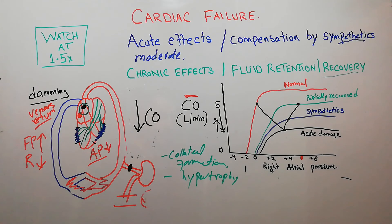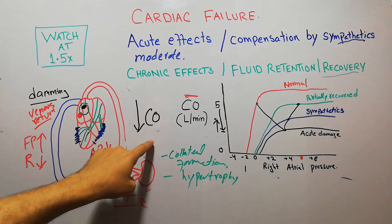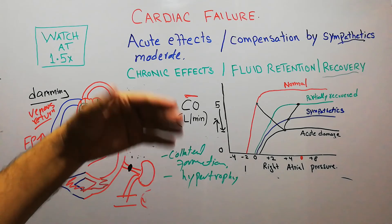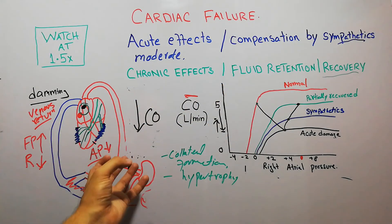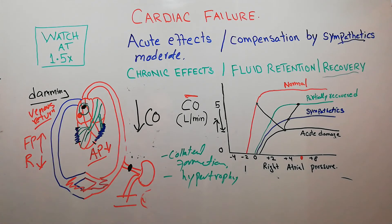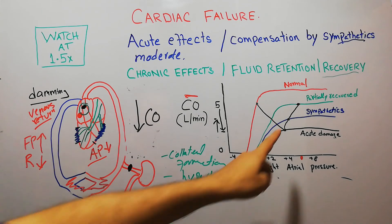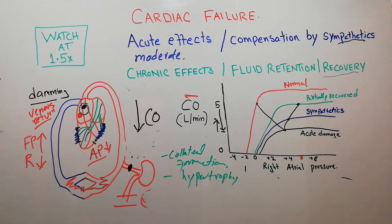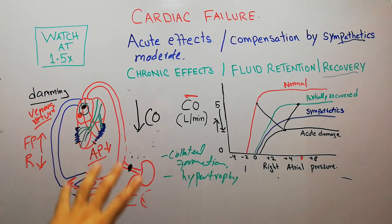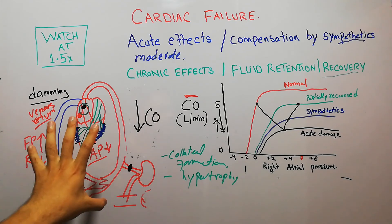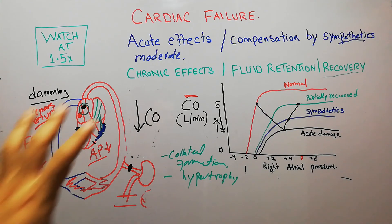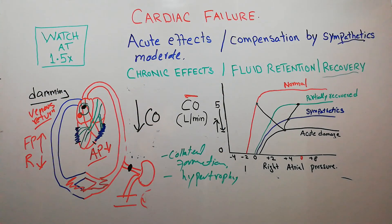In summary, the initial acute effects were decrease in cardiac output and damming of blood in the peripheries, compensated by the sympathetic system. Then the chronic stage starts with fluid retention: decreased blood flow to the kidneys reduces urine formation, fluid increases in the body leading to increased venous return, which recovers cardiac output toward normal. Eventually, the effects of the sympathetic system go away, heart rate and peripheral vasoconstriction return to normal, and the heart may completely recover.